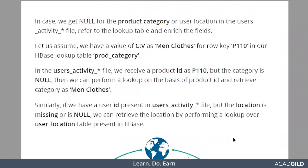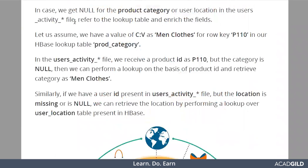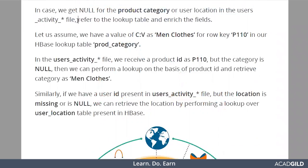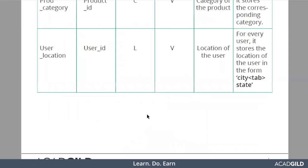Next comes the cleaning phase. In case we get null values from product category, we need to do some kind of enrichment using lookup tables. We will have lookup tables in HBase from which we will fetch data. If some data is missing, we check if the particular data has relative fields in the lookup table; if present, we join it and enrich our data, then perform the analysis based on enriched data. There are two lookup tables: one is product category and the other is user location.